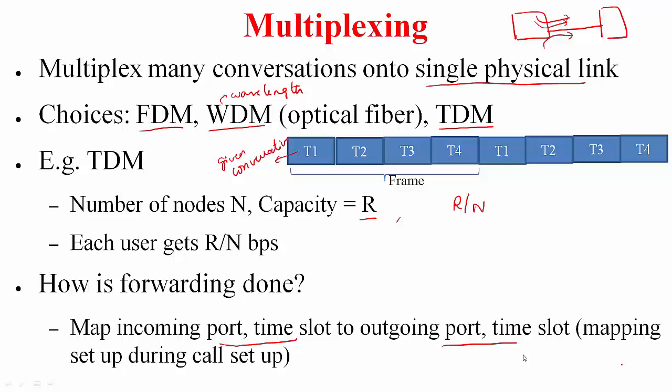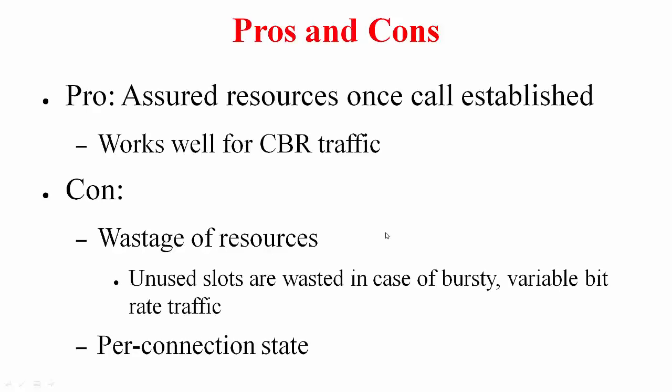So what are the pros and cons of this particular approach? We covered this as part of TDM. So basically the advantage is that you are issued resources once the call is established. This works very well for constant bitrate traffic. Voice belongs to this category, and that is why telephone networks use this particular switching. The disadvantage is that it can potentially lead to wastage of resources if the traffic is bursty or variable bitrate. Not only that, you need to maintain for a given flow some state in each of the switch, and if the number of connections become huge, like in the internet where we typically deal with billions of connections, maintenance of state becomes a very big issue.